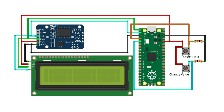The SDA pin of both the 16x2 LCD and the DS3231 RTC module is connected to GPIO pin number 0 of the Raspberry Pi Pico board. The SCL pin of both the 16x2 LCD and the DS3231 RTC module is connected to GPIO pin number 1 of the Raspberry Pi Pico board.